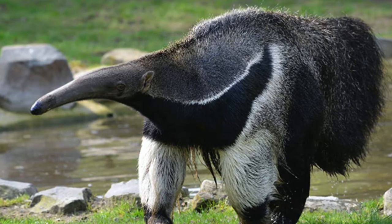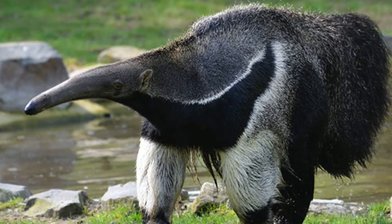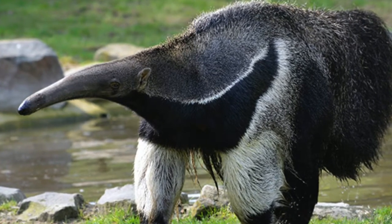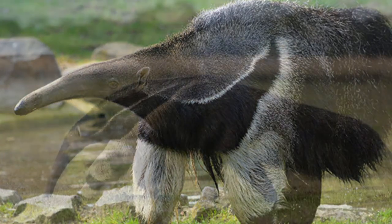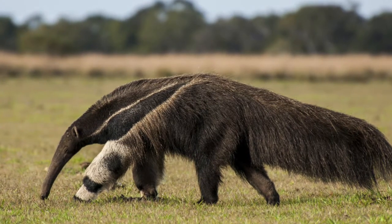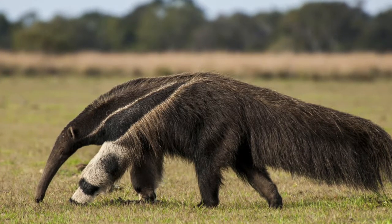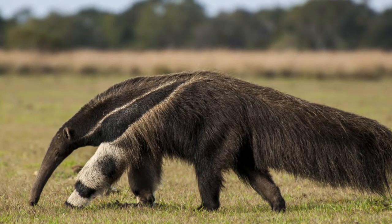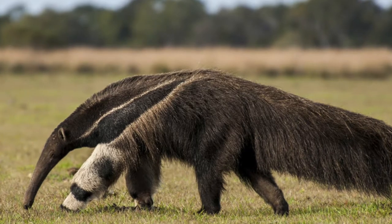The silky or two-toed anteater is the smallest of the group. It is the size of a squirrel. It has a silky yellowish coat and a long furry tail. Like lesser anteaters, the silky anteater lives in trees and feeds at night.